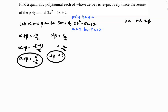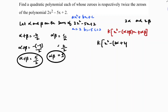Now I need to find a quadratic polynomial whose zeros are 2 alpha and 2 beta. Using the quadratic polynomial formula k times x squared minus (alpha plus beta) times x plus alpha times beta, but now the zeros are 2 alpha and 2 beta. So substituting: k times x squared minus (2 alpha plus 2 beta) times x plus 2 alpha times 2 beta.